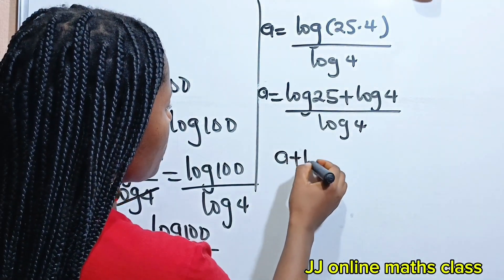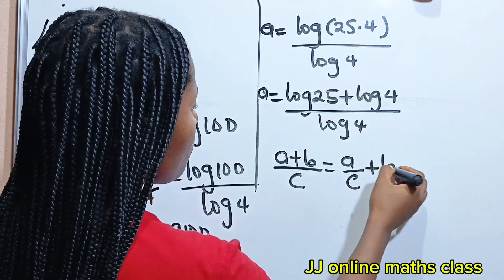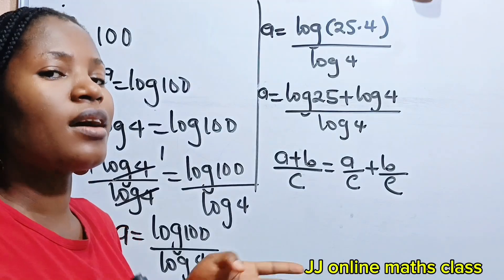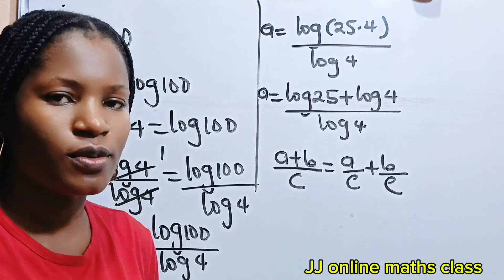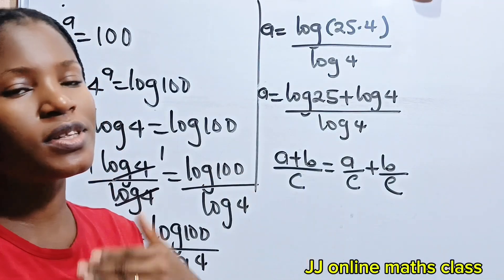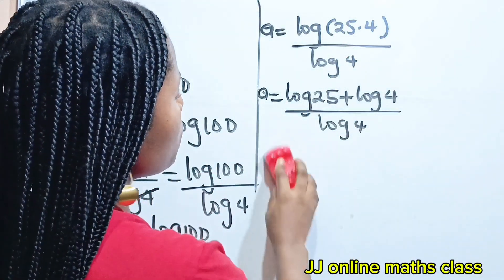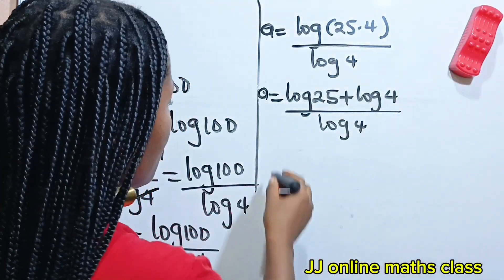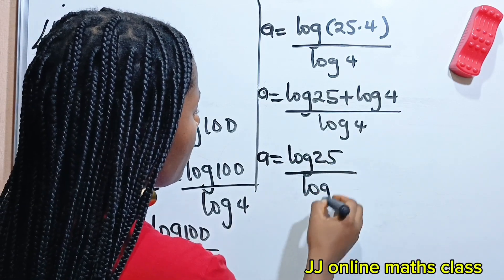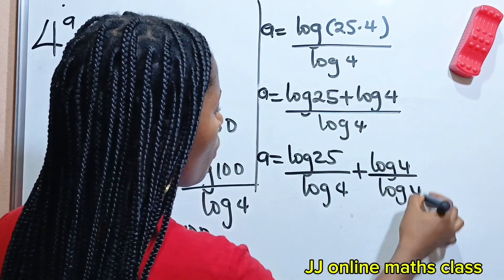Now remember that A plus B divided by C is equal to A divided by C plus B divided by C. So that means we can write this as A is equal to log 25 divided by log 4 plus log 4 divided by log 4.